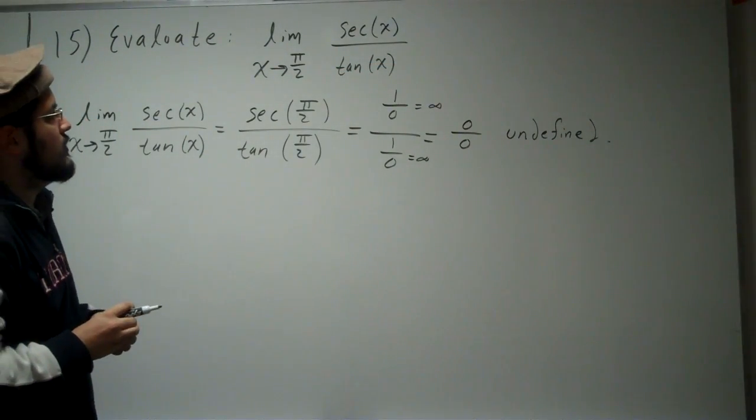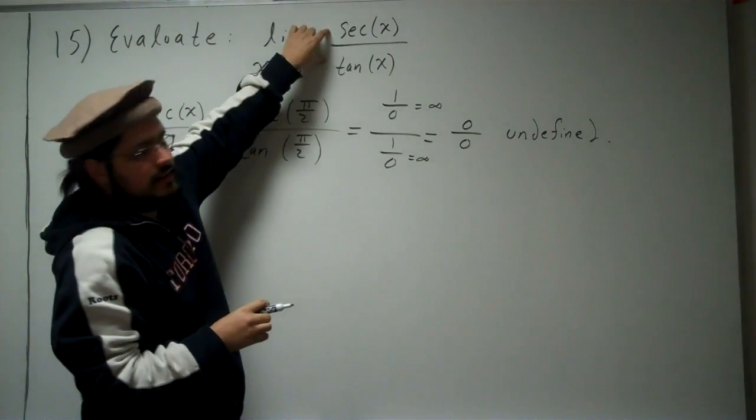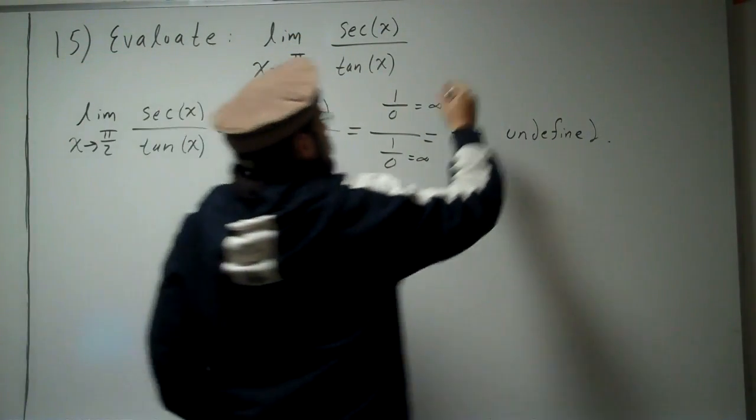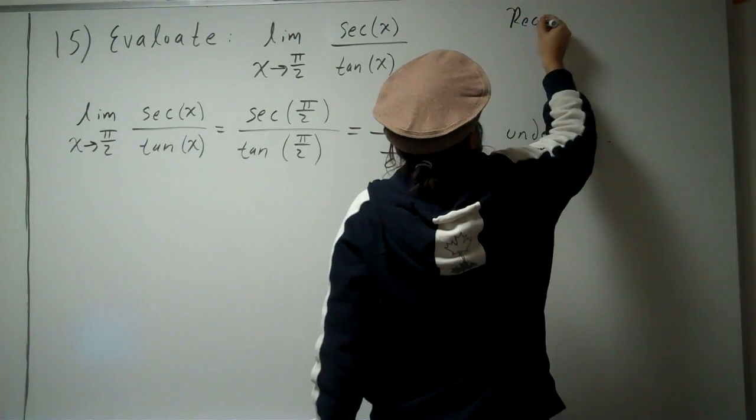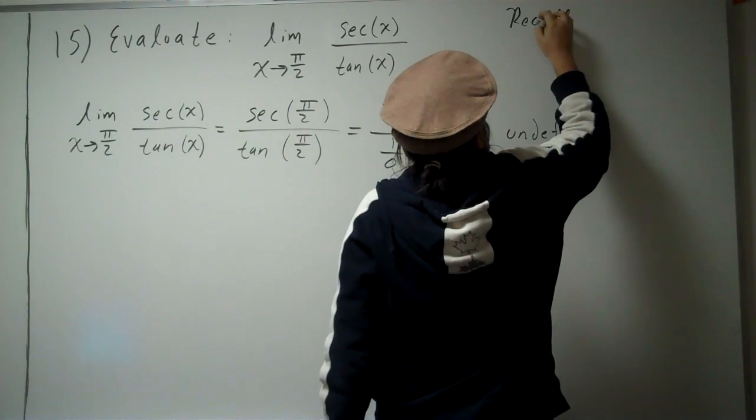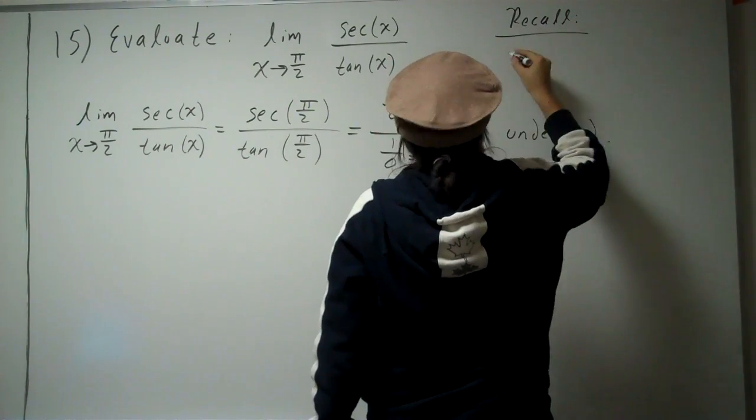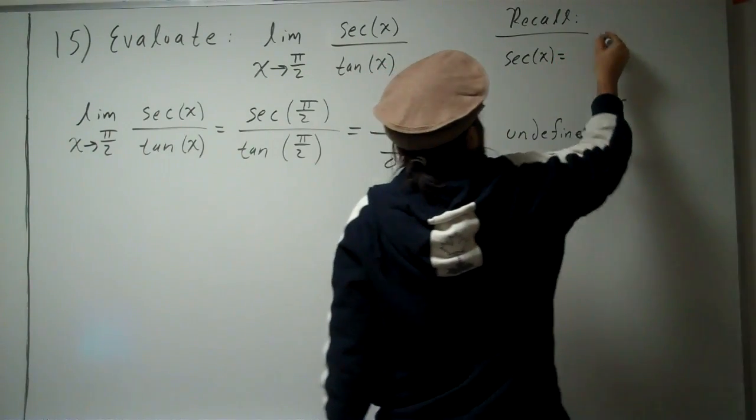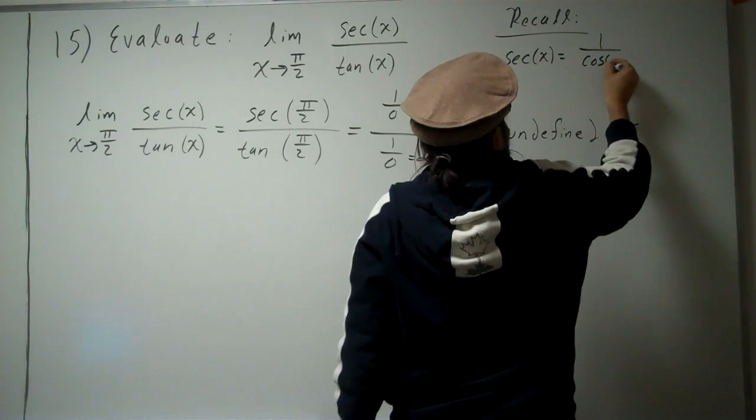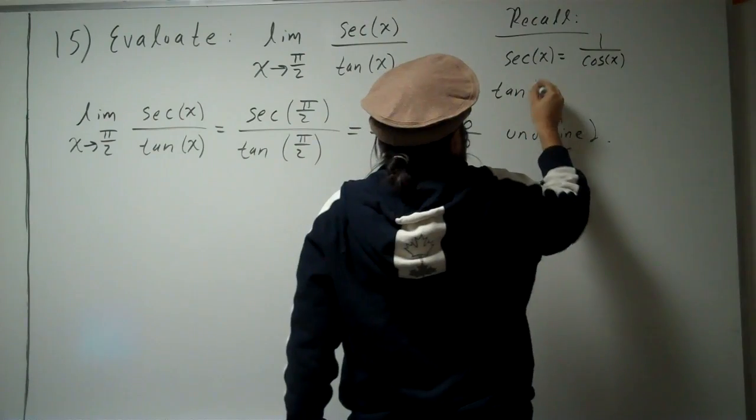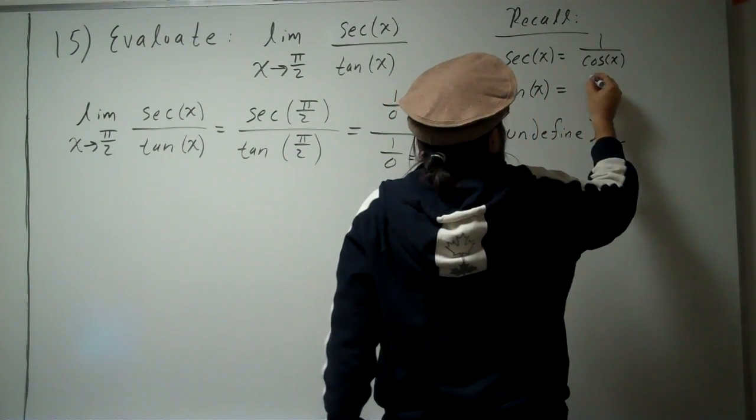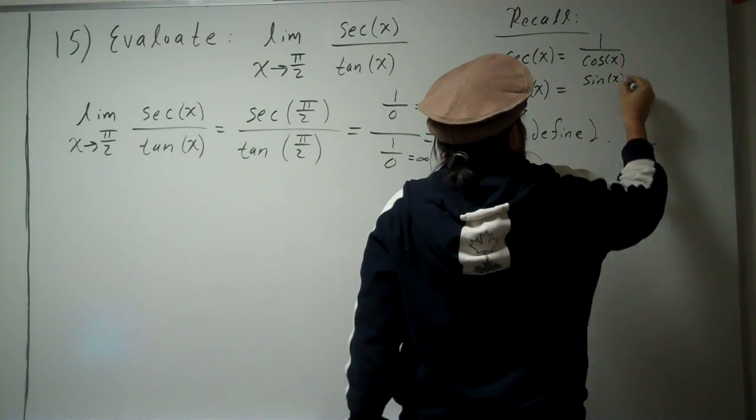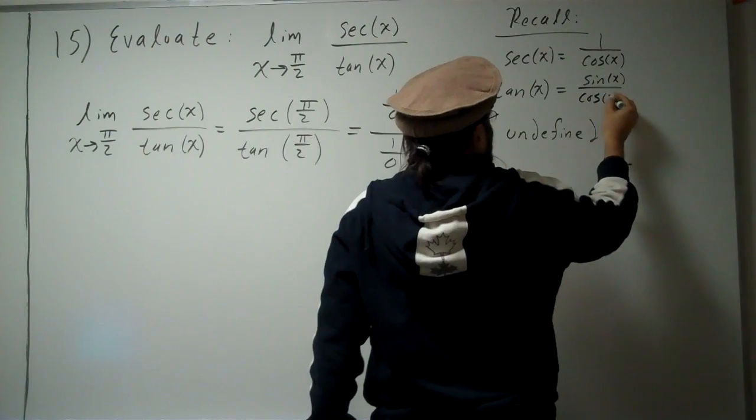Okay, so what's the more work? We've got to go ahead and try to simplify this, the secant and the tangent. Let's recall some trigonometric identities here. Alright, we know that secant of an angle is equal to 1 over cosine of the angle. And we also know that tangent of an angle is equal to sine of the angle divided by cosine of the angle.